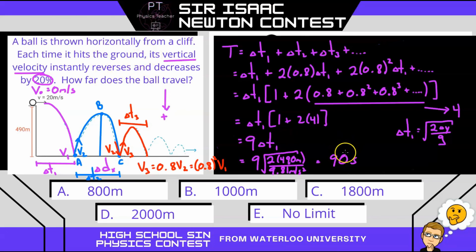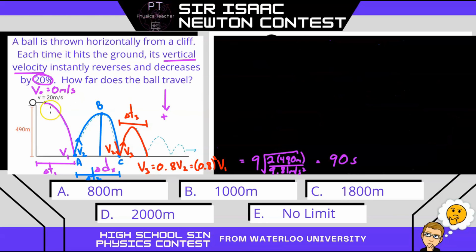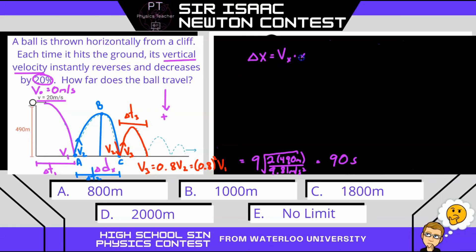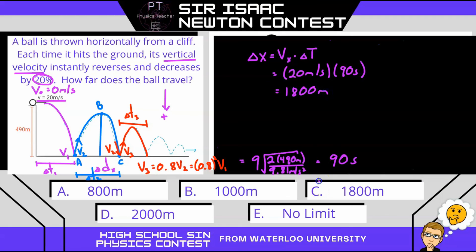And once we have the time, the rest of the problem is fairly simple. We go back and look at the X component. In projectile motion, not considering air resistance, the horizontal component of velocity never changes. So the range, the displacement in X, is the velocity in X times the total time. Velocity in X is 20 meters per second, and total time is 90 seconds, so that gives us 1,800 meters. Our answer is C.